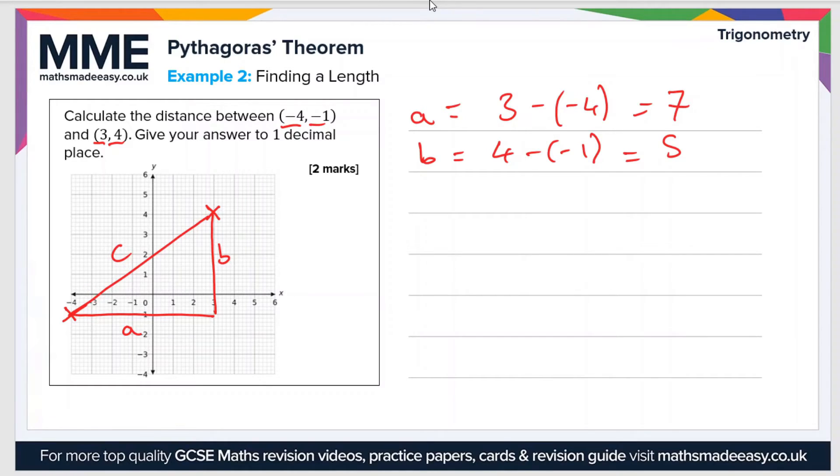If we just rewrite our expression with Pythagoras' theorem once again, A squared plus B squared equals C squared, or we can use the other version, which is C equals the square root of A squared plus B squared. Now we've got our values of A and B, we can substitute them into this expression.